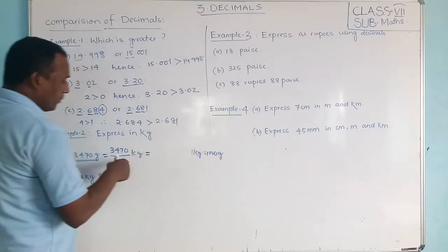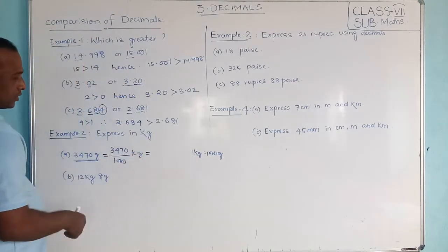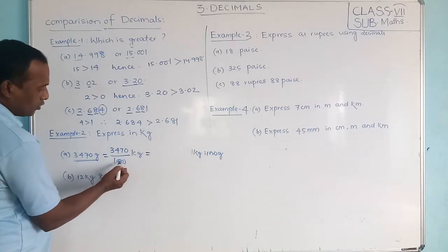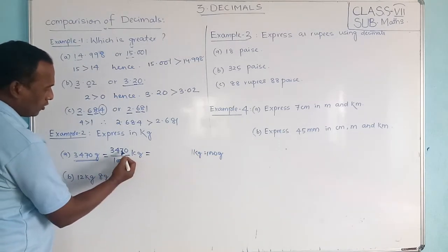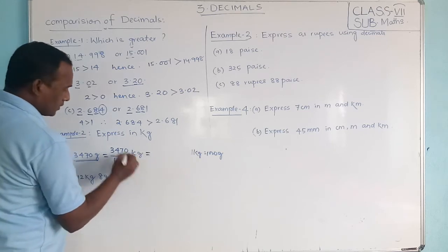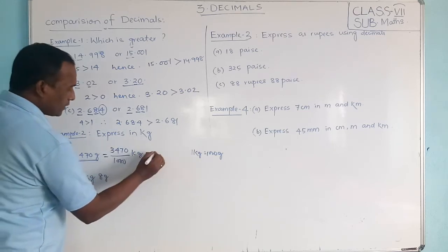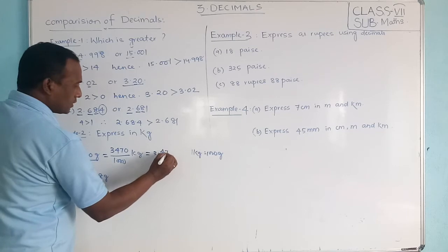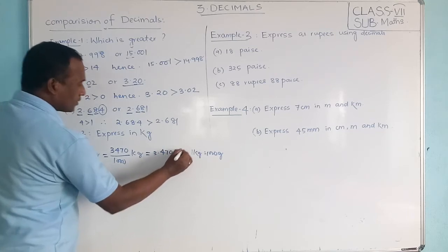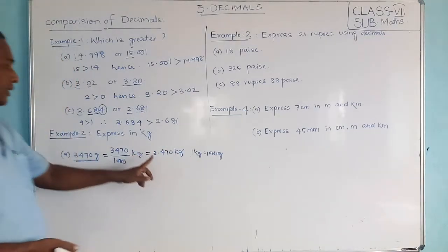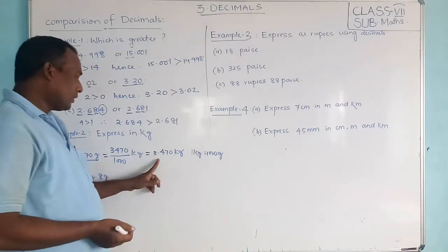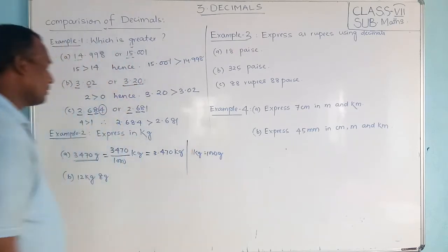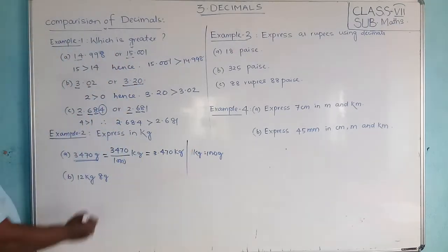When you divide by 1000 and make it a decimal, there are three zeros, so from the right side count 1, 2, 3 places and place the decimal point. So 3470 grams divided by 1000 gives 3.470 kilograms. So 3.470 kilograms — that is the answer.